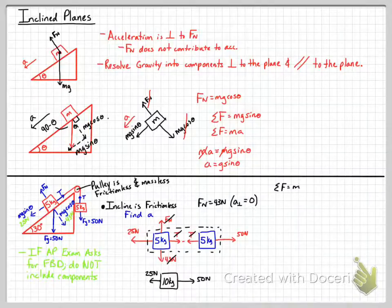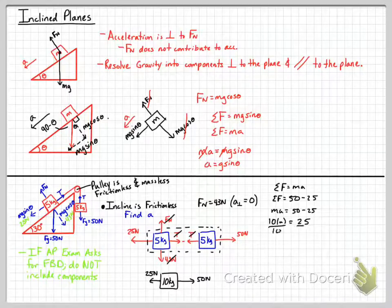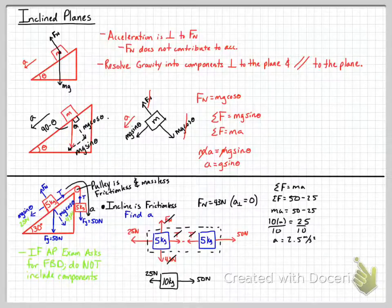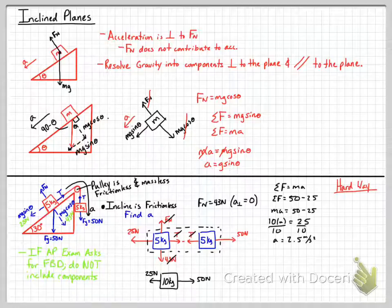Writing the net force equation: net force equals MA, and net force equals 50 N minus 25 N, where the mass is the total effective mass of 10 kg. So 10 kg times acceleration equals 25 N, giving an acceleration of 2.5 meters per second squared. The system accelerates in the direction of the unbalanced force — down on the hanging side and up the inclined plane on the other side.